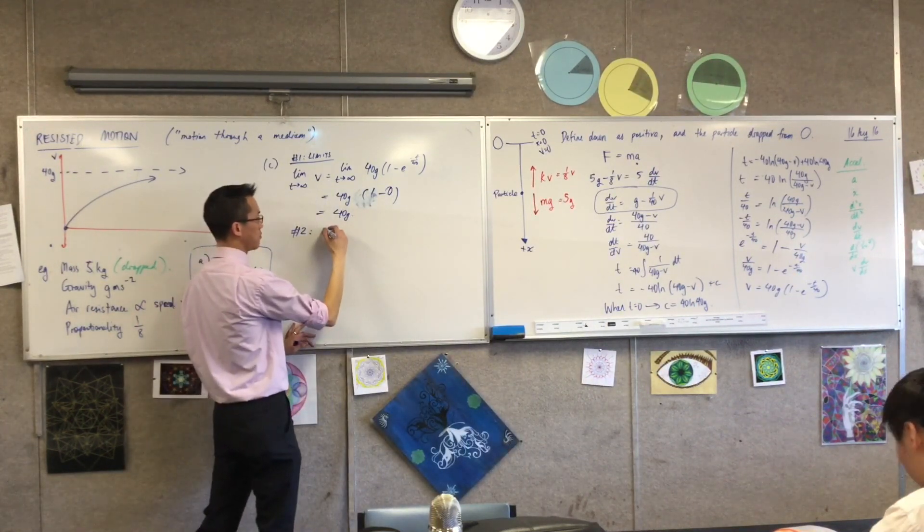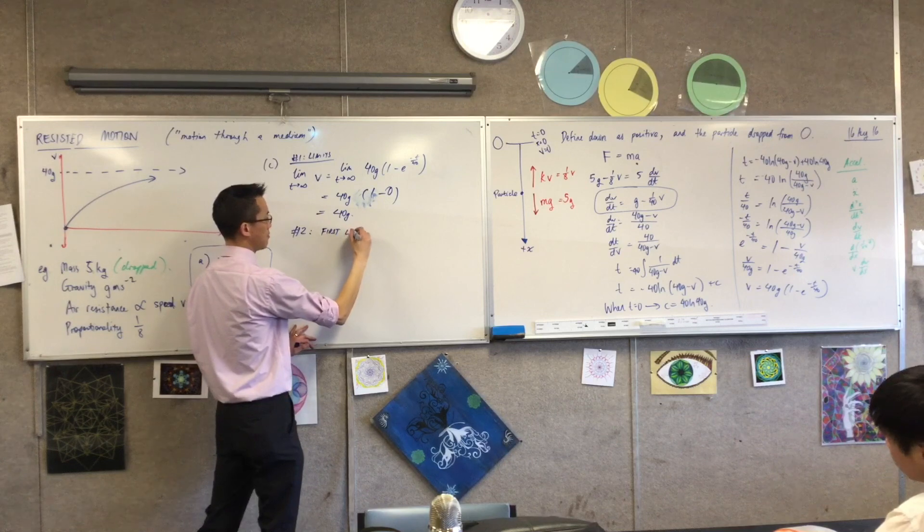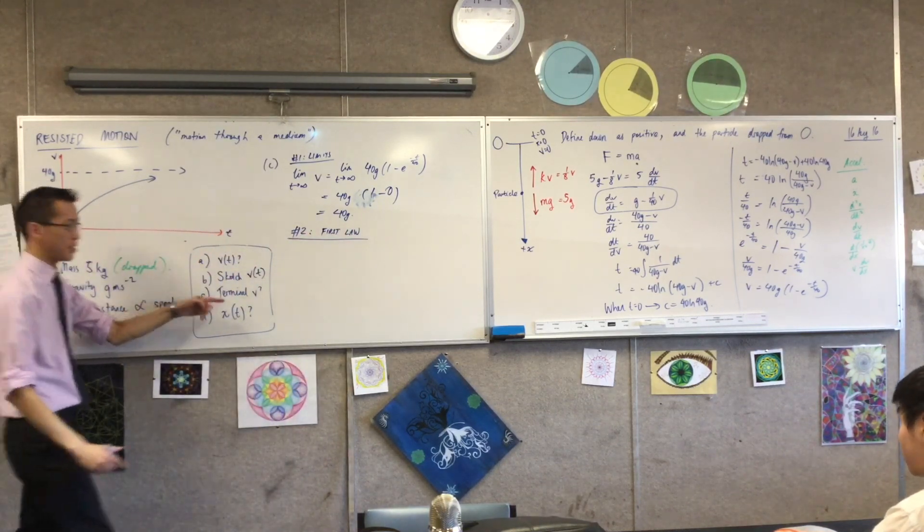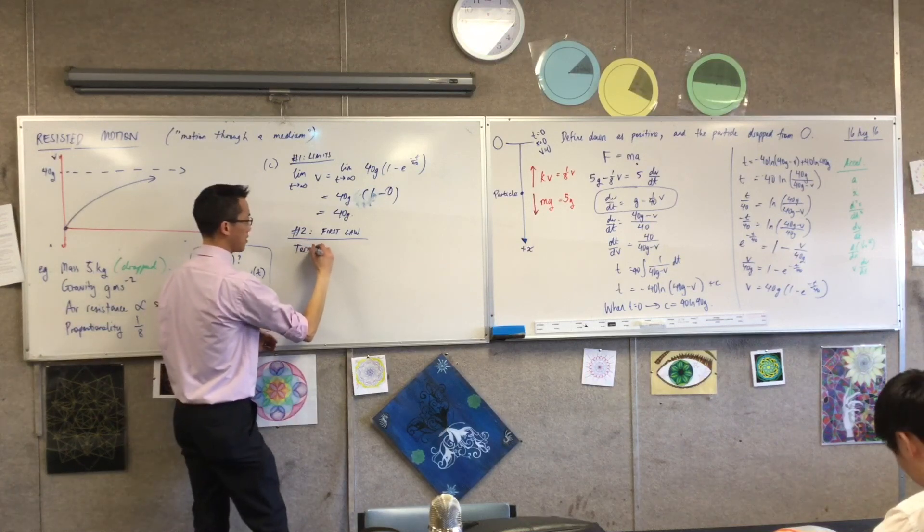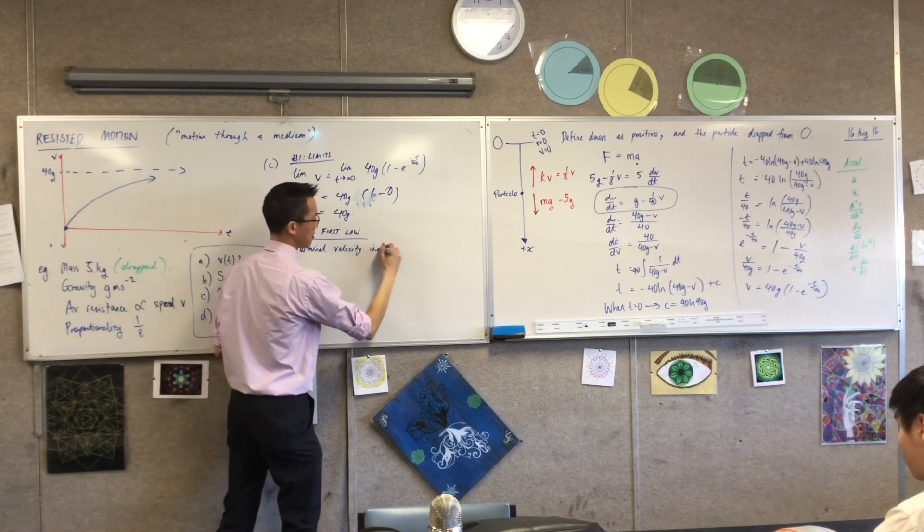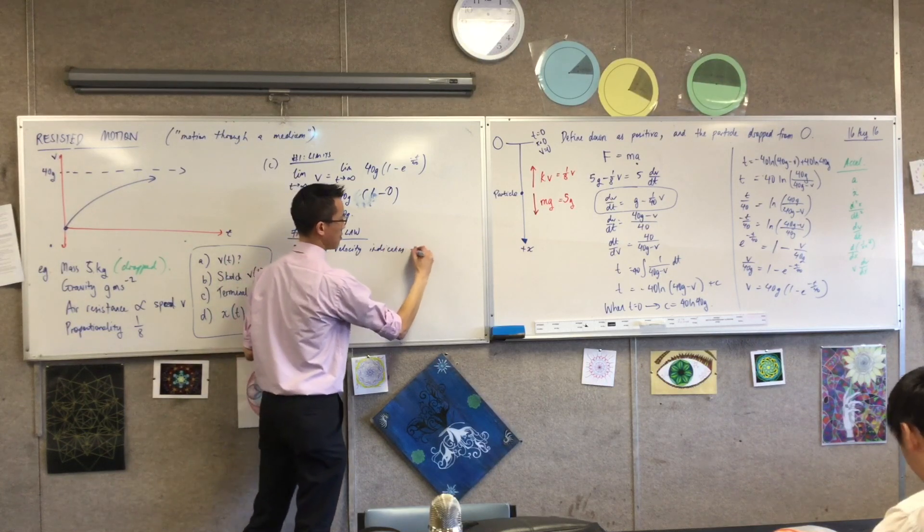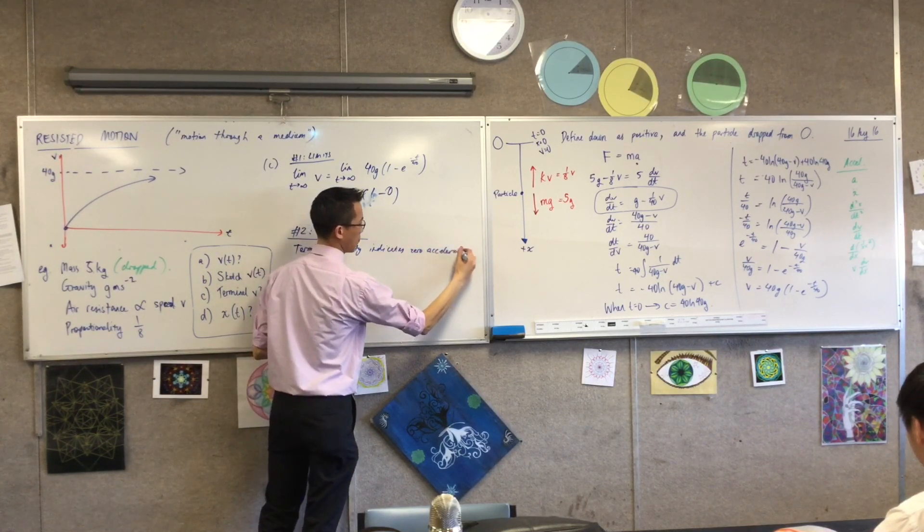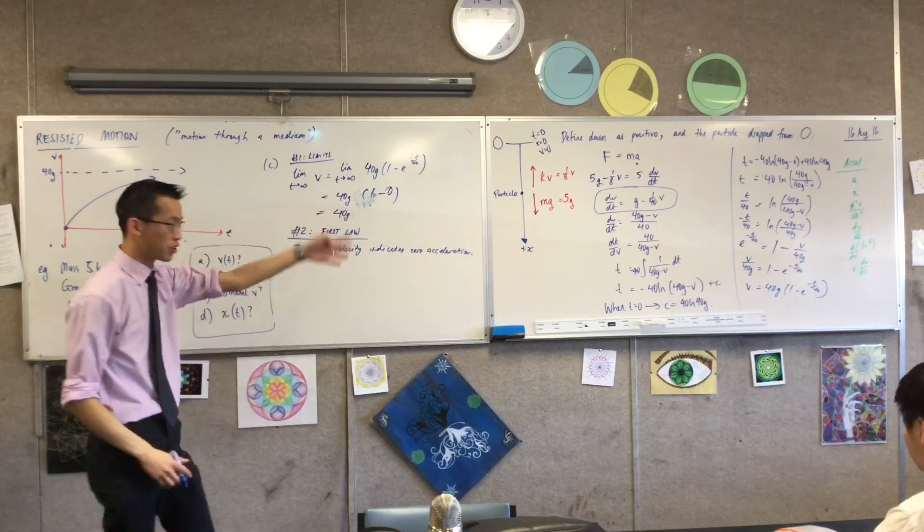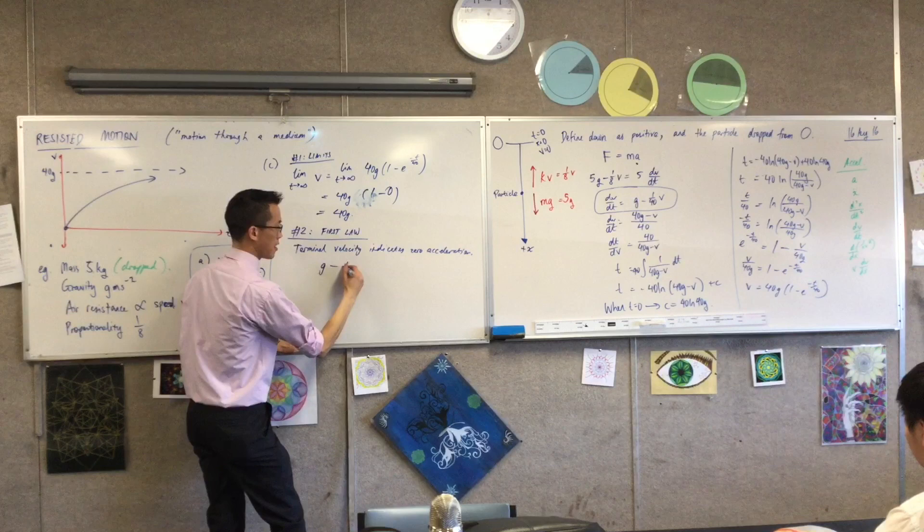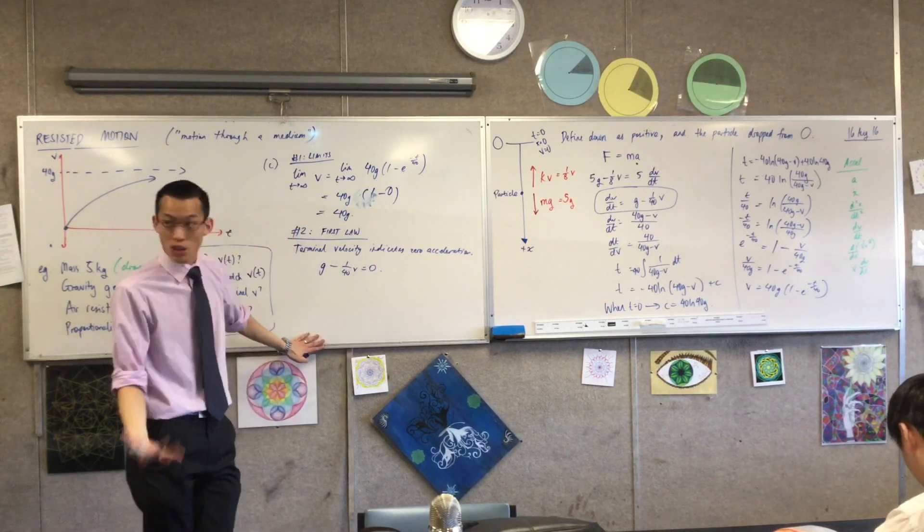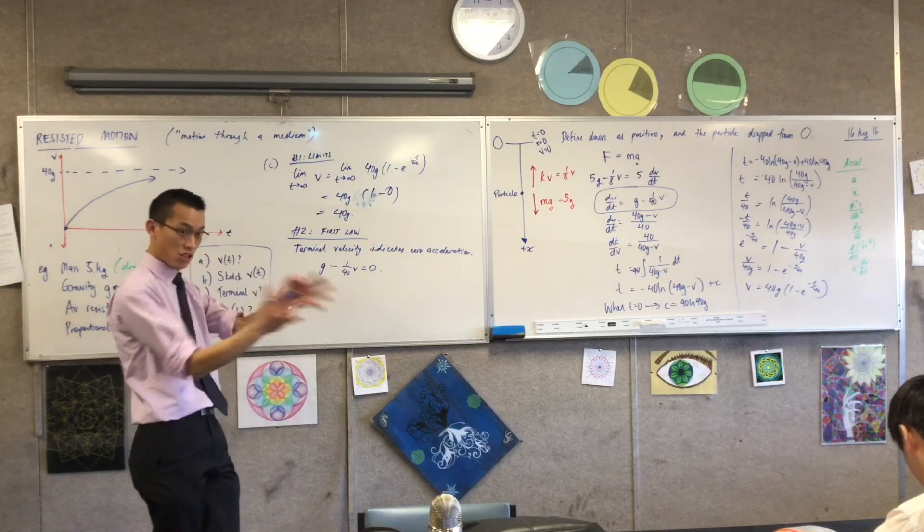if there's terminal velocity, terminal velocity means or indicates zero acceleration. So I'm going to go over to my acceleration function and I'm just going to say that G minus 1 on 40V, that better be zero because otherwise it's not terminal velocity, is it? It's something still changing its velocity.